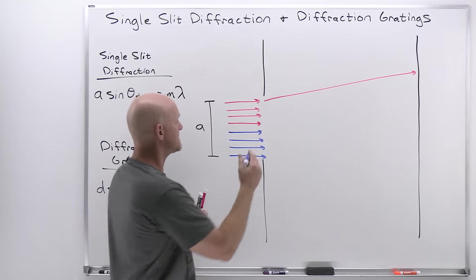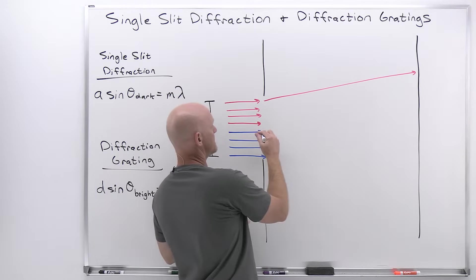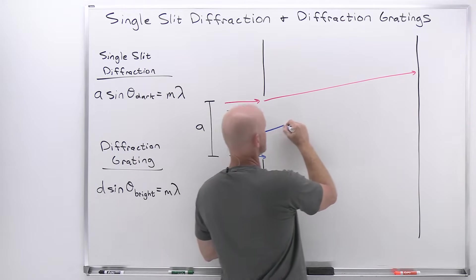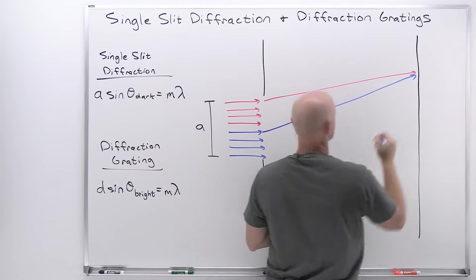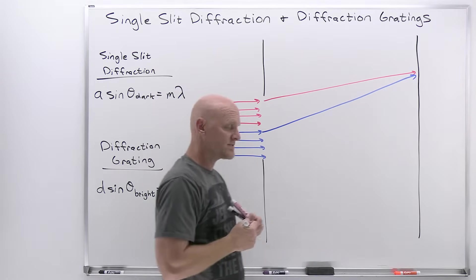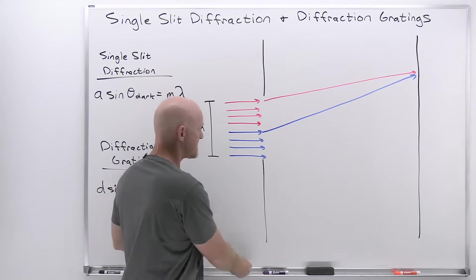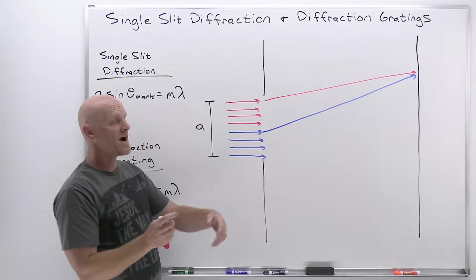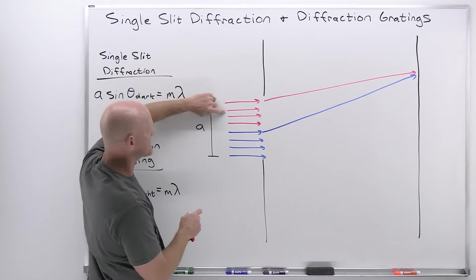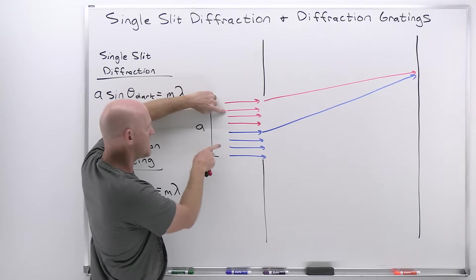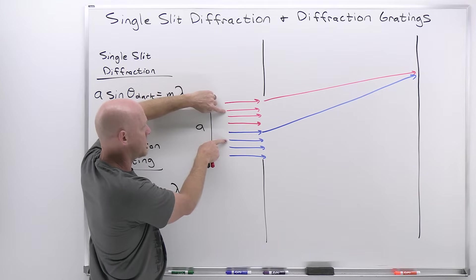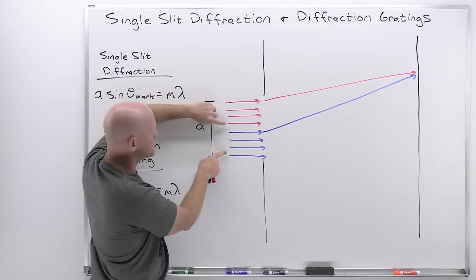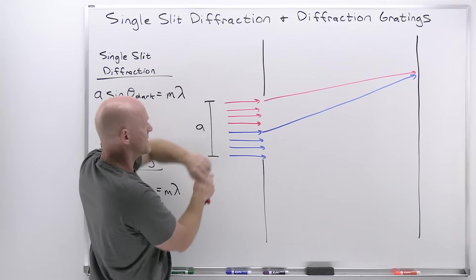I'm going to take another one halfway down the slit and have it travel to exactly the same location — pairing those two up. Similarly, I'll take the second one from the top and pair it with a corresponding one, and continue pairing them in this fashion.